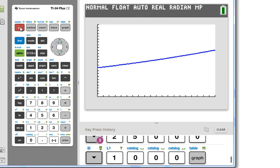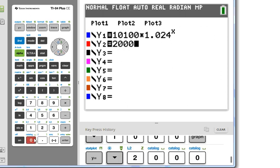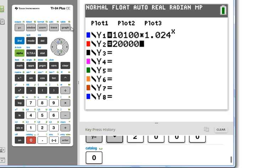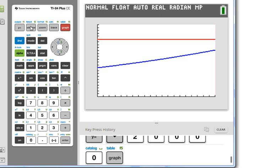To find out how long it takes to reach 20,000, we can put in a second equation, second function, 20,000, and graph. We do not have an intersection point, so we need to change our window to adjust for that.